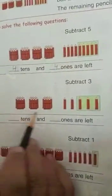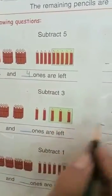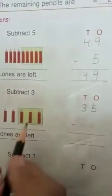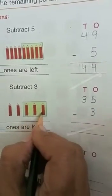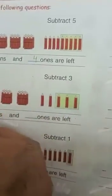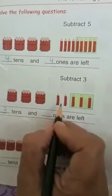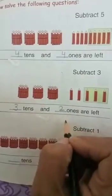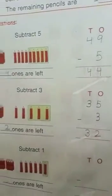Now next: subtract 3. How many tens are here? 3 tens. And how many ones? 5 ones. Now we subtract 3 — we cut these 3 pencils. How many pencils are left? 3 tens and 2 ones. So the answer is 32.